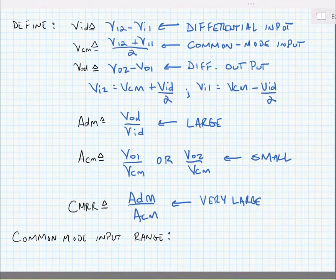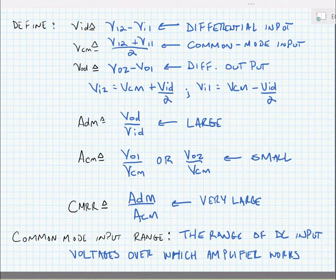Finally, often with differential amplifiers, we talk about the common mode input range. This is the range of DC input voltages over which the amplifier works. Typically, for the common mode input range, we like this to be a very wide value approaching the supply rails if possible.